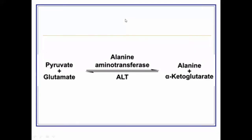This enzyme, ALT or alanine aminotransferase, is involved in the transfer of an amino group. The amino group from glutamate — which is an amino acid — will be transferred to pyruvate. After receiving the amino group, pyruvate becomes alanine, and the glutamate becomes alpha-ketoglutarate after losing its amino group.